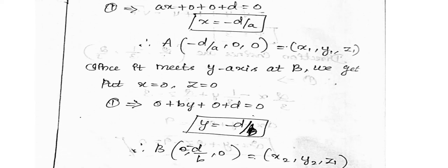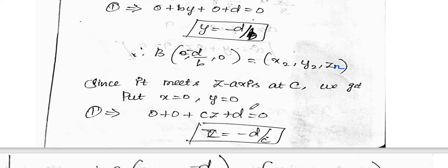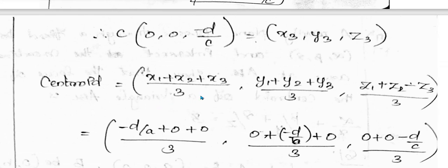Similarly, the y-axis intercept B is found by setting x = 0 and z = 0, giving y = -d/b, so B = (0, -d/b, 0). The z-axis intercept C is found by setting x = 0 and y = 0, giving z = -d/c, so C = (0, 0, -d/c).